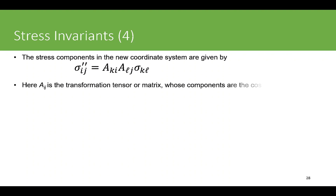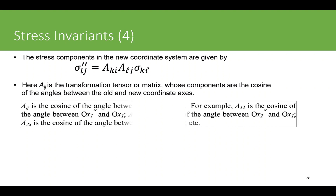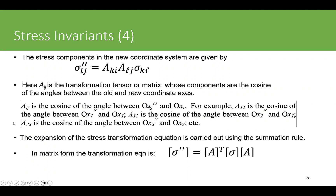The transformation tensor a_ig has components that are the cosines of the angles between the old and new coordinate axes. The operation follows the Einstein summation convention — we have three by three matrices multiplied together, or equivalently three second-order tensors, yielding nine components in the resulting tensor.